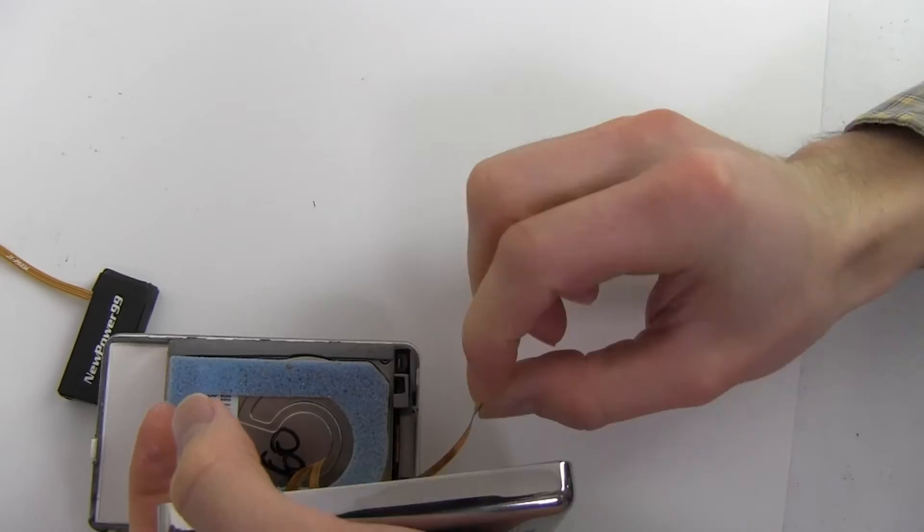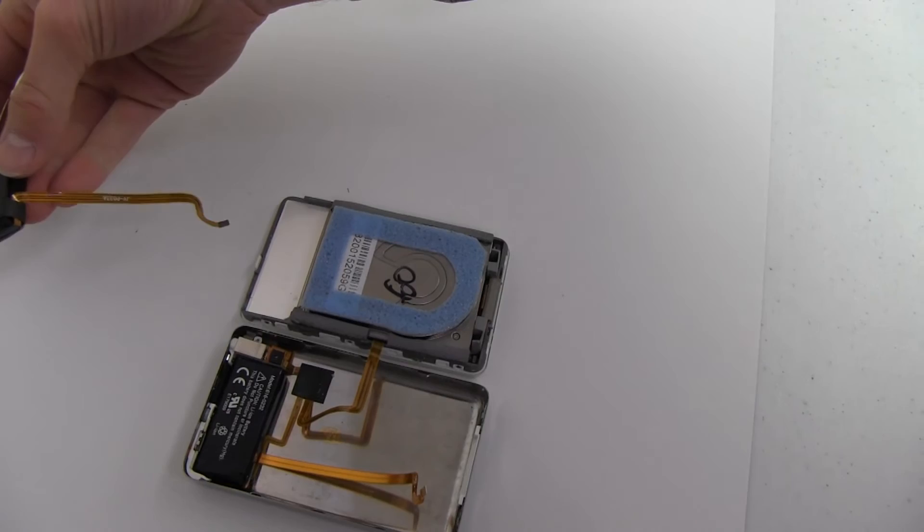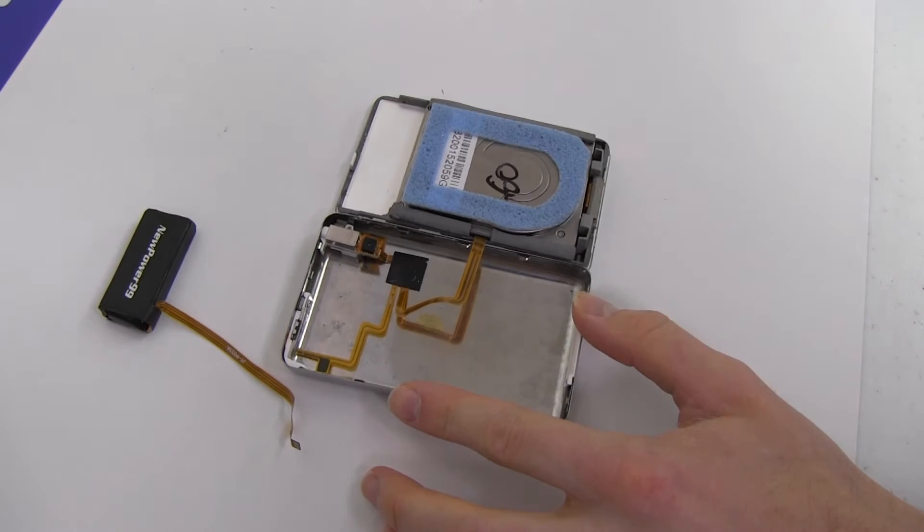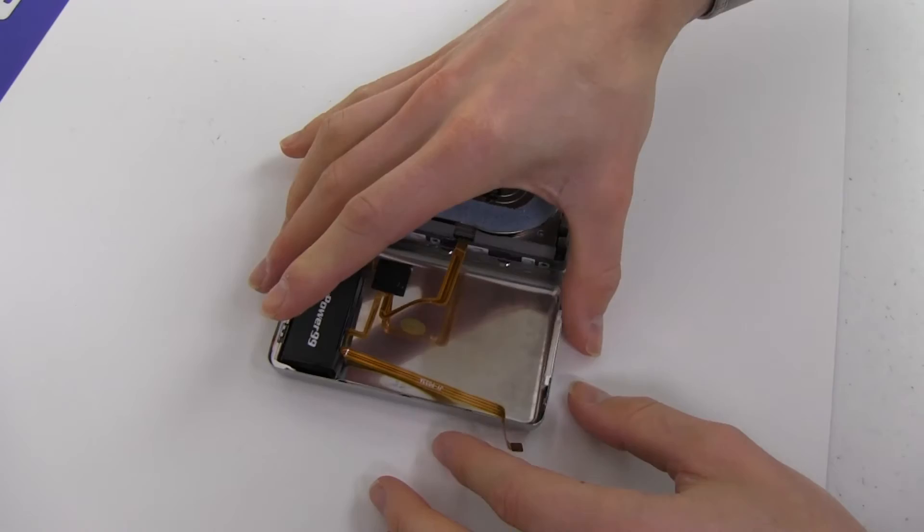Disconnect and remove the original battery as shown. Seat your new extended life battery from NewPower99.com. Carefully connect as shown and reseat if necessary.